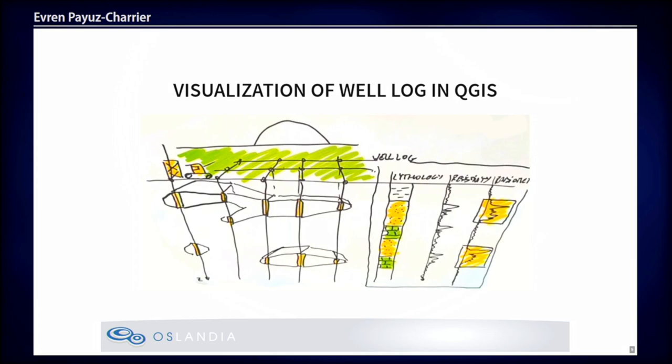This drawing represents how we can represent the well log. On the left you can see drill holes going in the vertical section, and along the vertical section you have some geological information called lithology — basically the log properties that you find along the hole. You can display as much geophysical information as you want, for example resistivity. The OpenLog plugin is already able to do so.